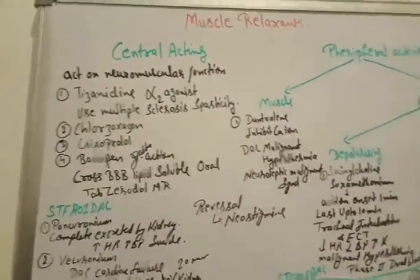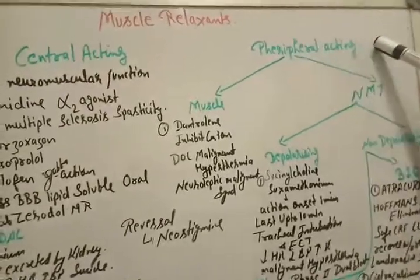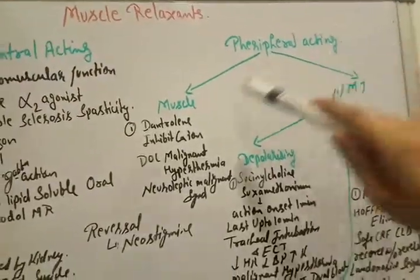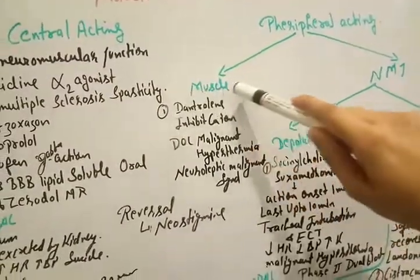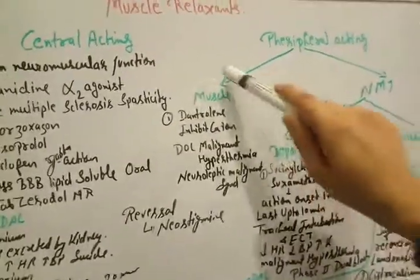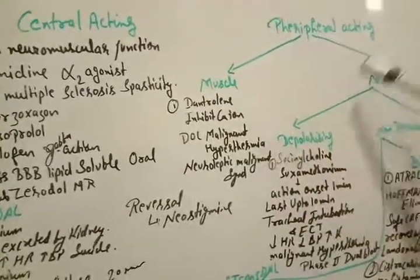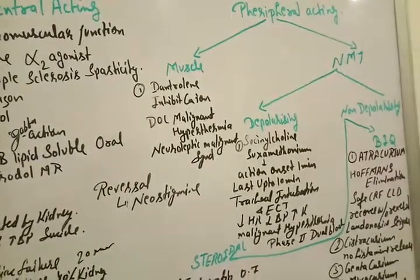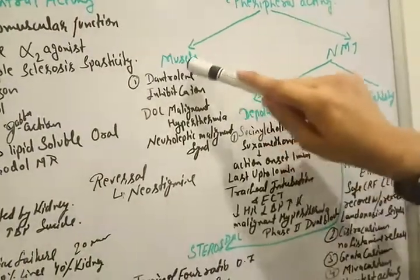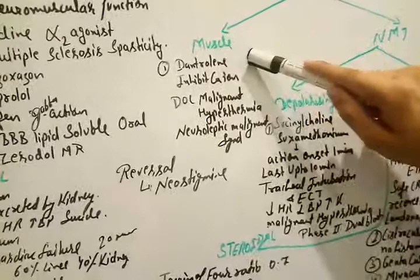Now I am going to explain you about the peripherally acting muscle relaxant. It is included in the classification like muscles which is acting directly on muscle, NMJ is neuromuscular junction acting. So now I am going to explain you about the drugs which are acting on the muscle directly.